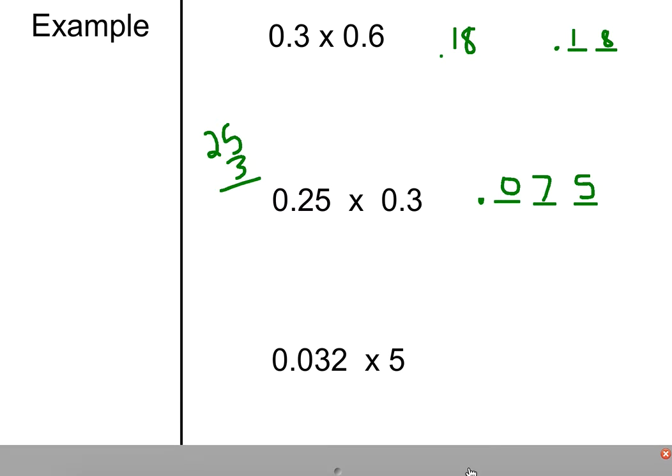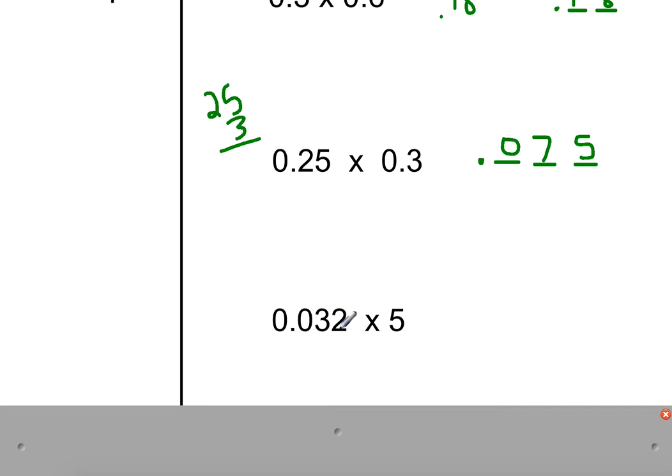So I've got one more. So again, I have the thousandths times 1, which my decimal point would be in the thousandths place. 5 times 2 is 10. Carry the 1. 15, 160 thousandths. So I can just fill that in.